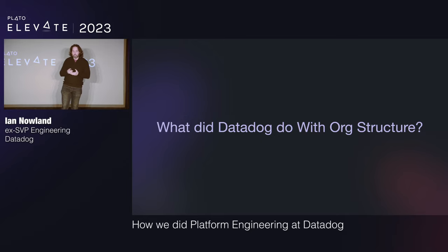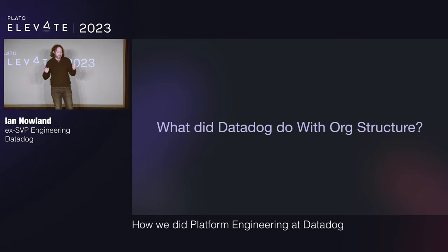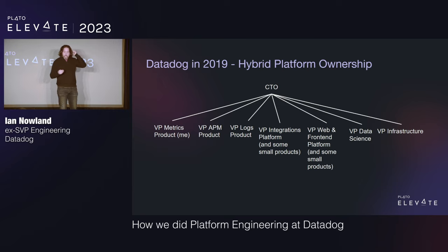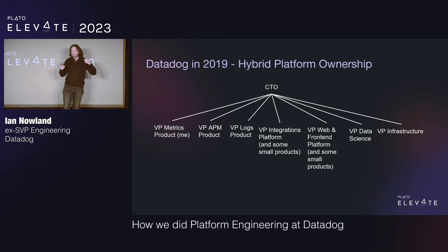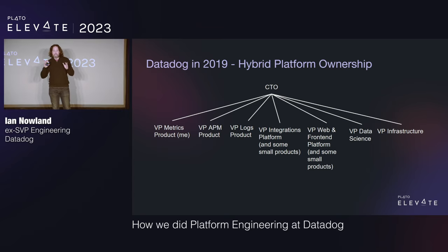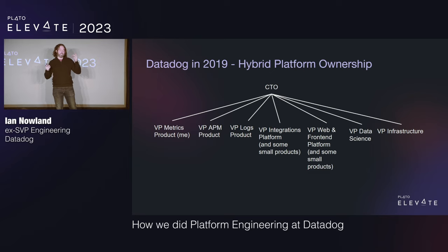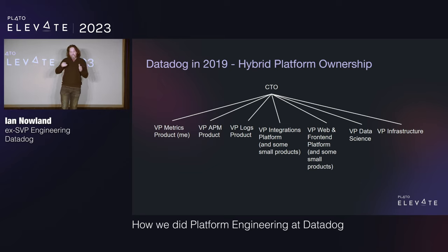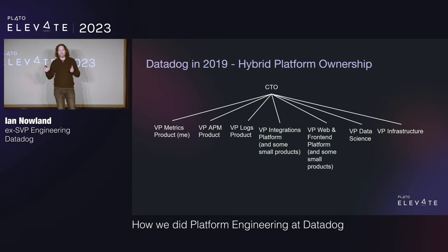Platform engineering as a movement should try to solve these problems. At Datadog, the first thing tried was solving this with org structure — it actually ended up with a promotion for me. This was Datadog when I got there in 2019: about seven VPs, engineering was around 350, each managing about 50. There was one true infra org which had some platforms, but everything else was a hybrid platform-product structure. Datadog had the three pillars of observability — APM, metrics, logs — as big orgs, with smaller products and platforms mixed in between.